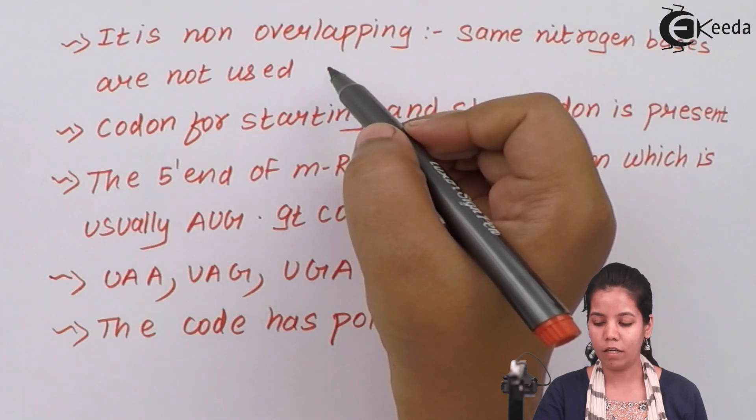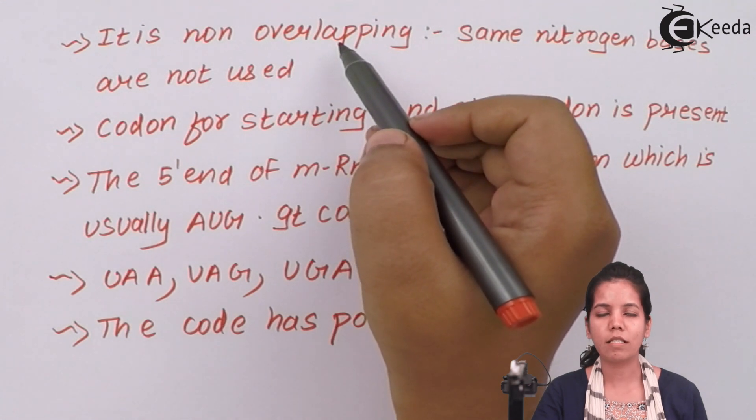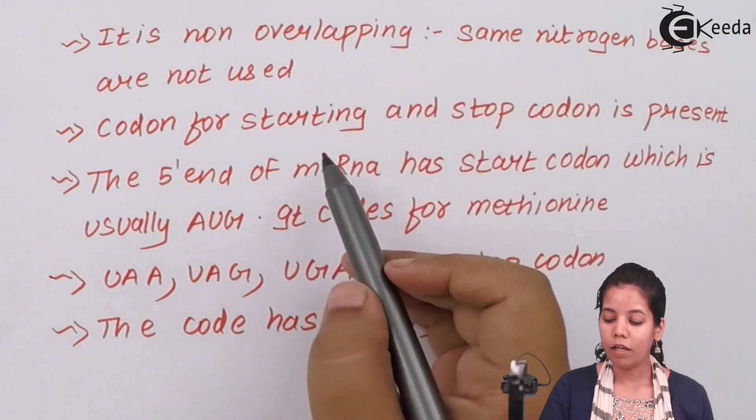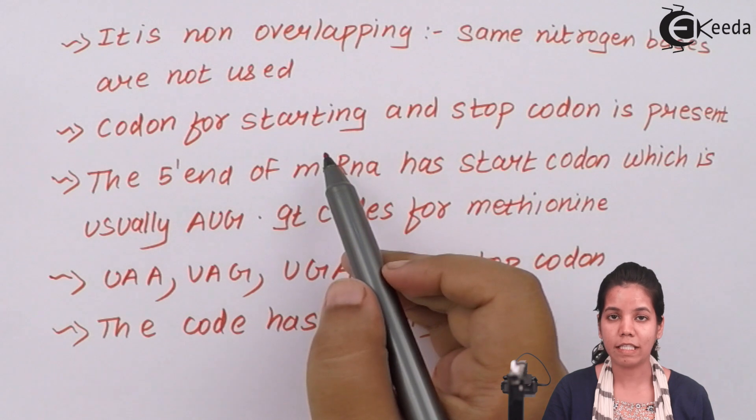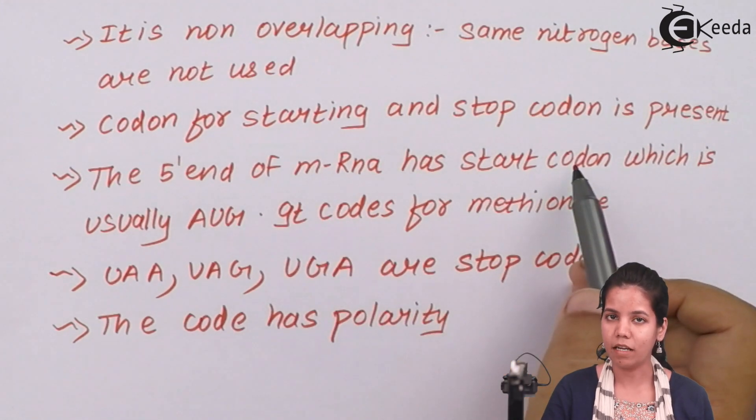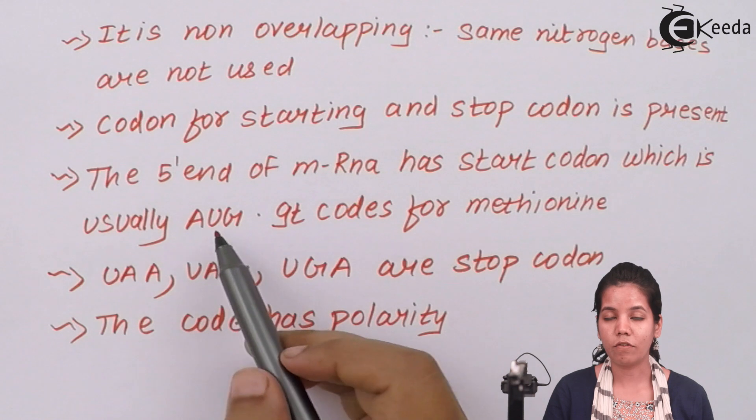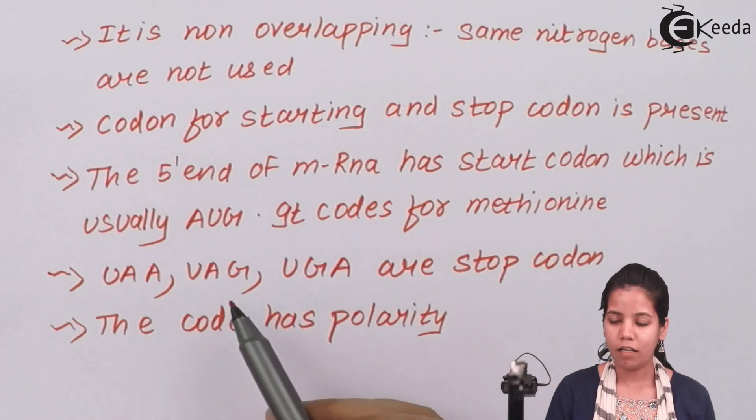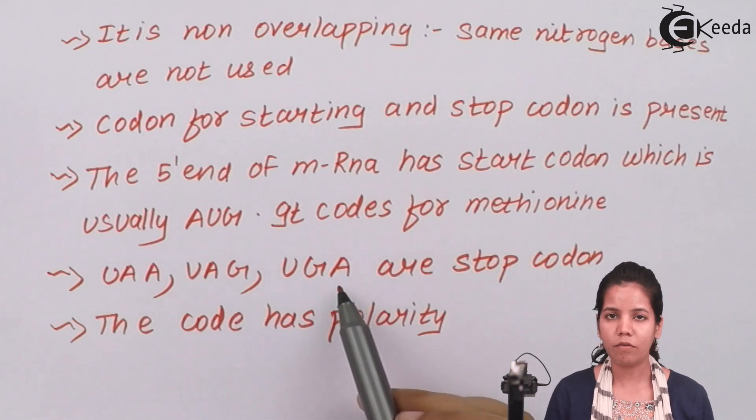Properties of genetic code are that this code is non-overlapping. It means nitrogen bases are never reused for a particular triplet codon. The codon or mRNA for protein synthesis will have a start codon for protein synthesis initiation and a stop codon to stop that protein synthesis. Basically on the 5 prime end of mRNA start codon is present and this start codon in eukaryotes is always AUG, and AUG codes for amino acid methionine. Whereas the stop codon can be UAA, UAG or UGA. These three are various stop codons which can be present.